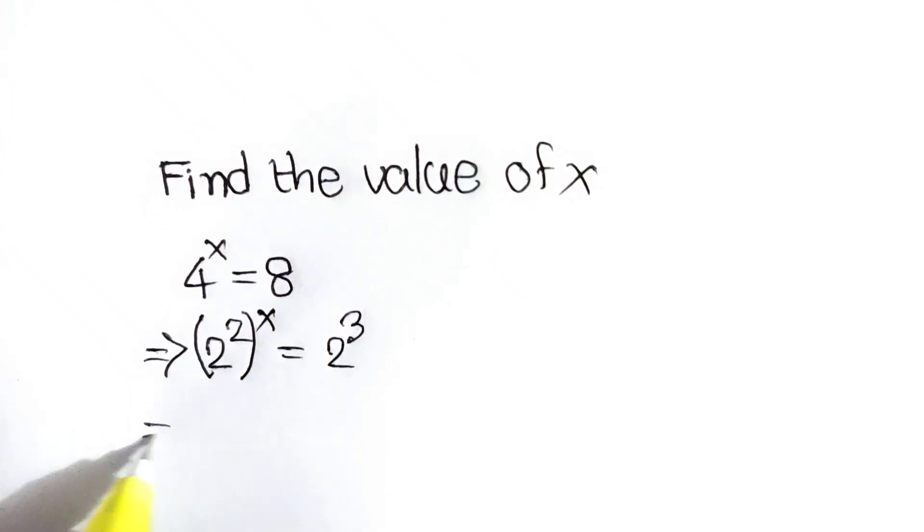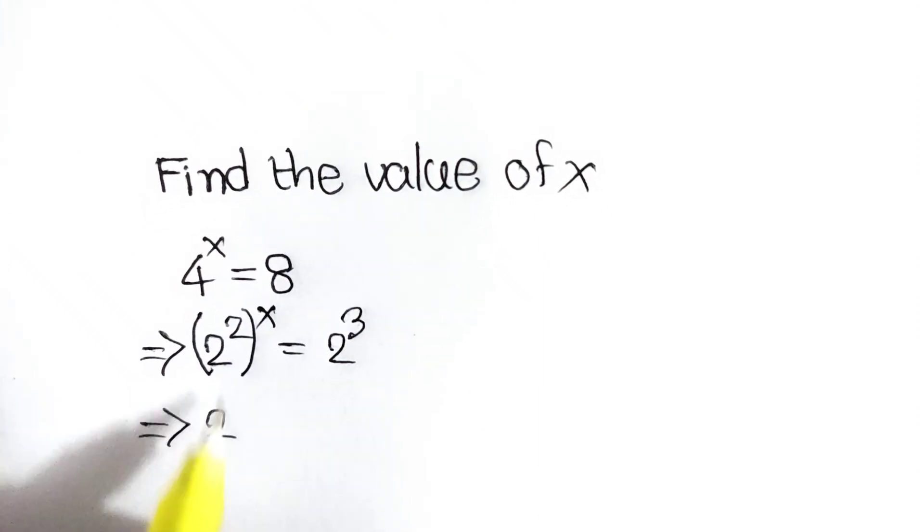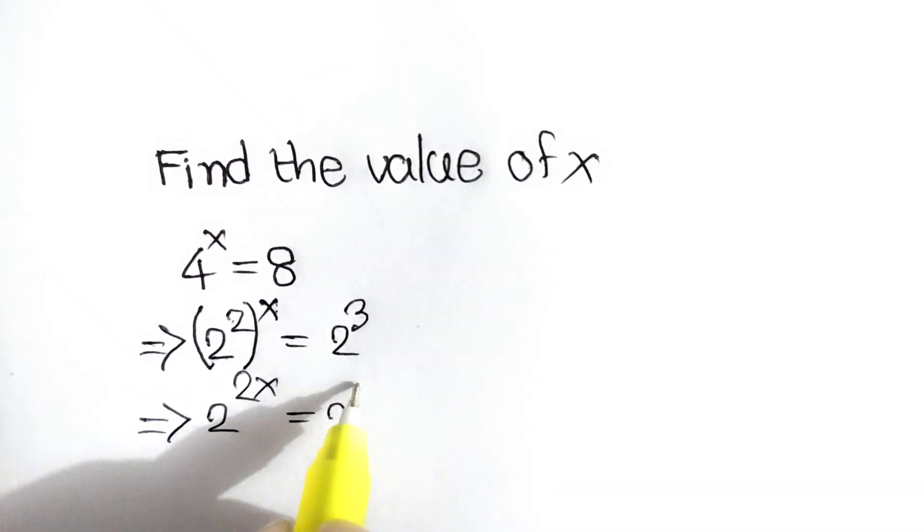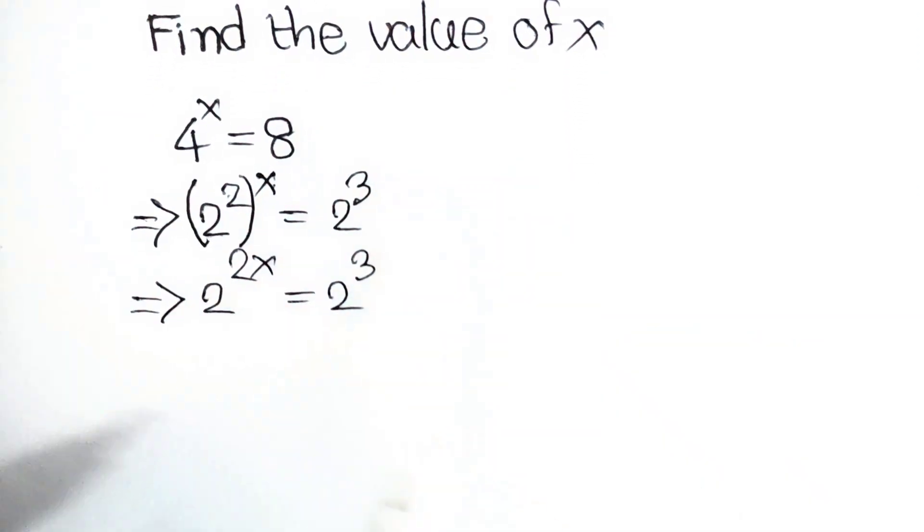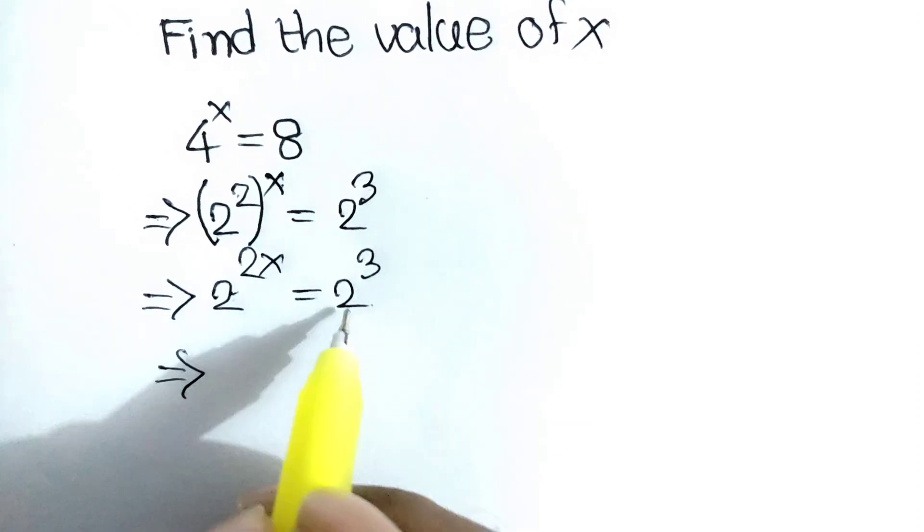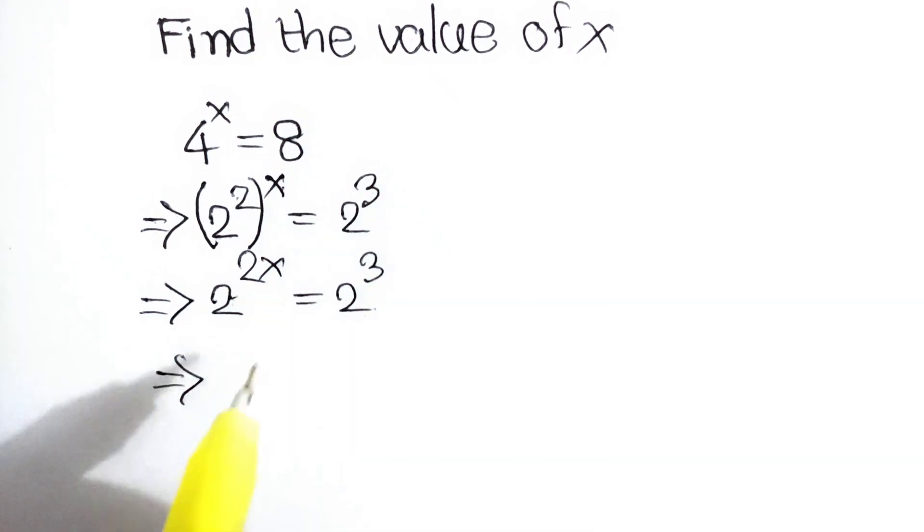Next step, we can write 2 to the power 2x is equal to 2 to the power 3. The bases are the same, so we can cancel out the 2s.